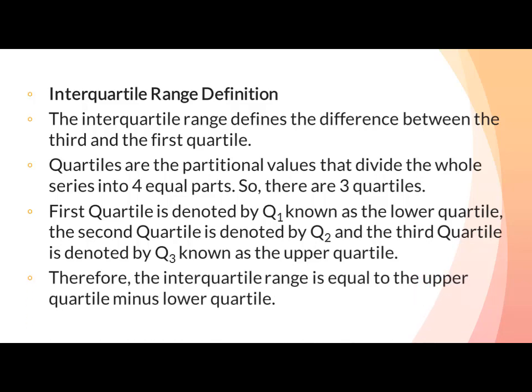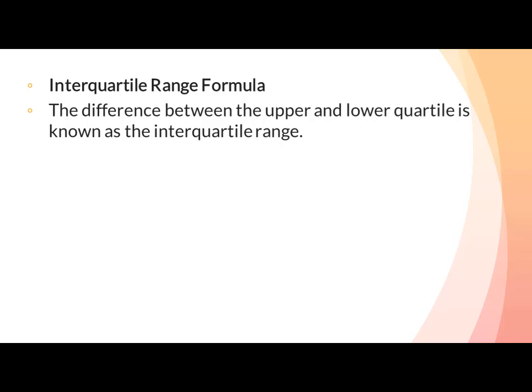Therefore, the interquartile range is equal to the upper quartile minus the lower quartile — that is, Q3 minus Q1۔ Interquartile range formula: the difference between the upper and lower quartile is known as the interquartile range. The formula for the interquartile range is given below.